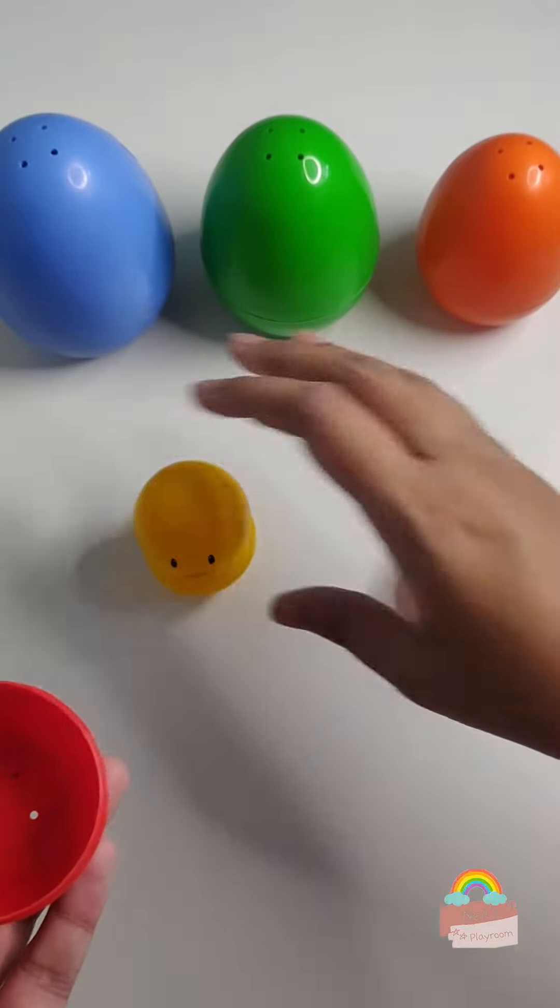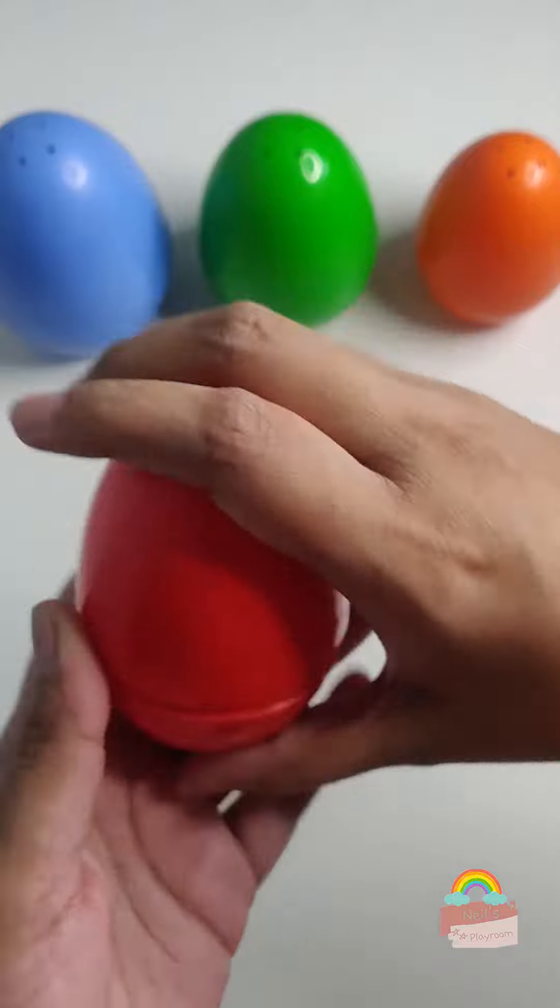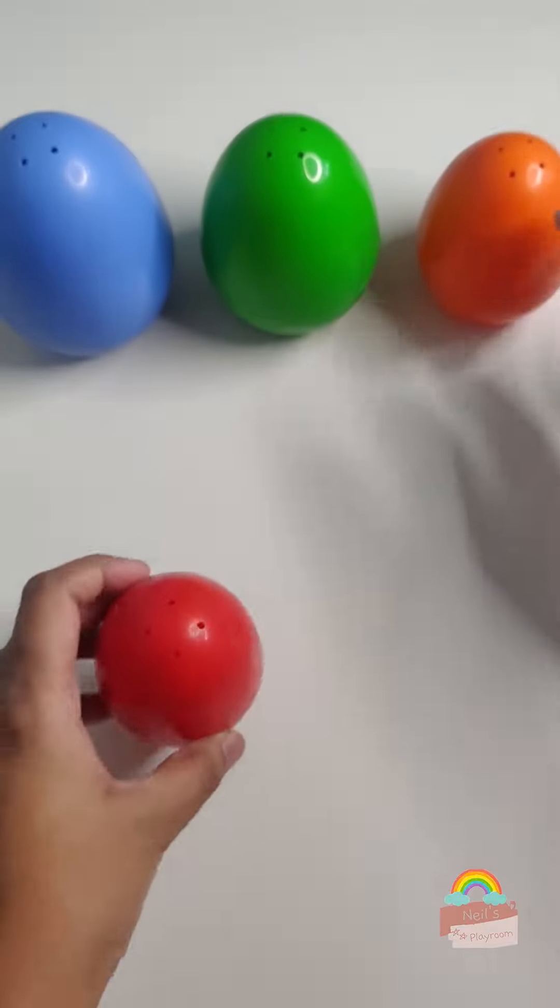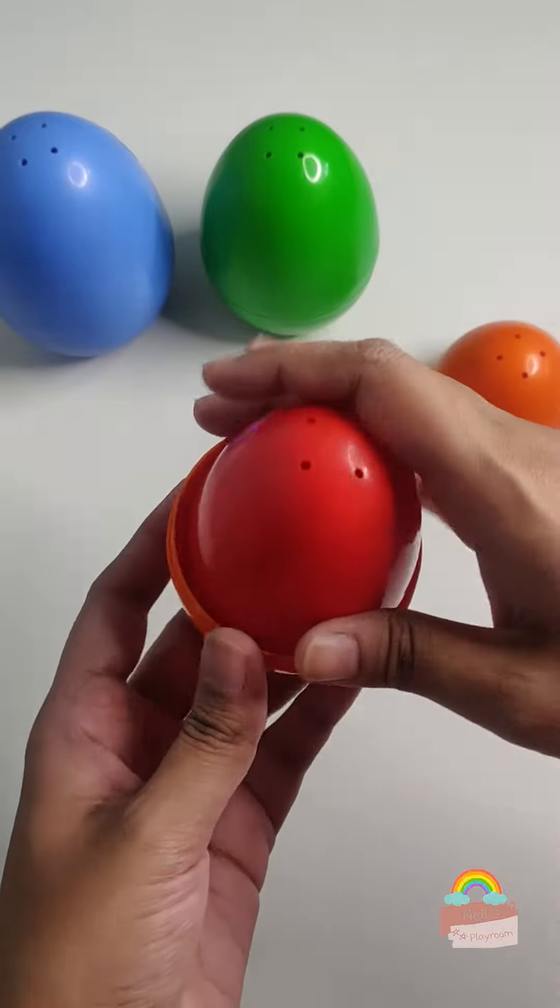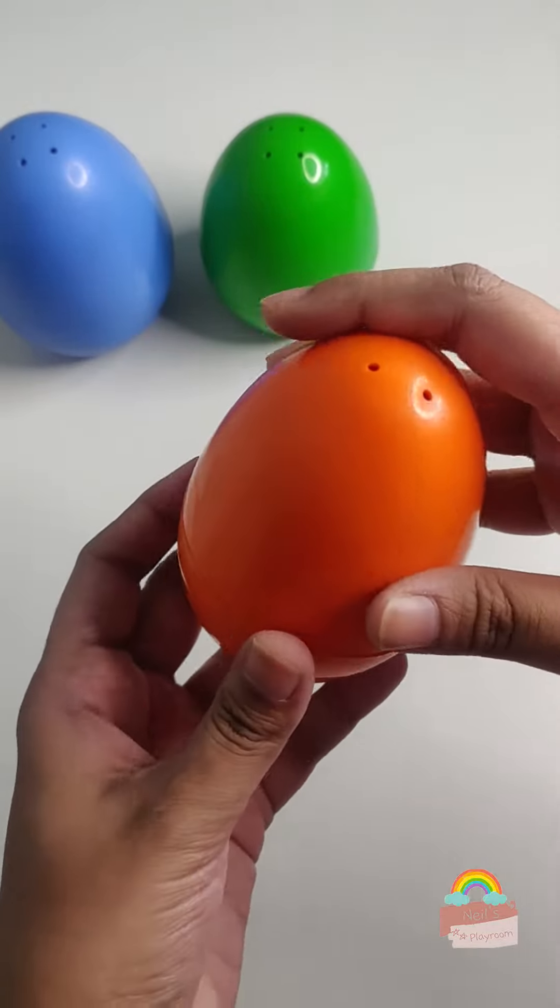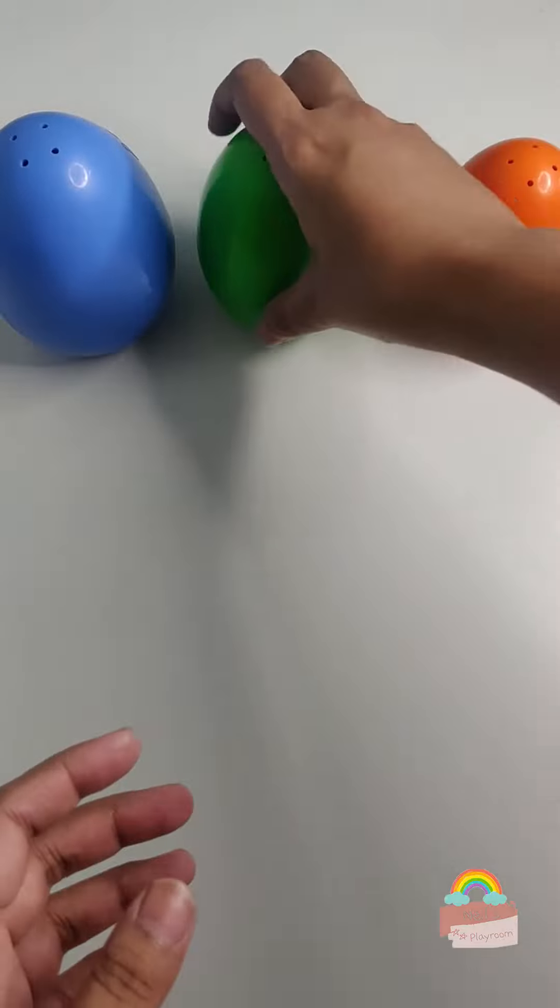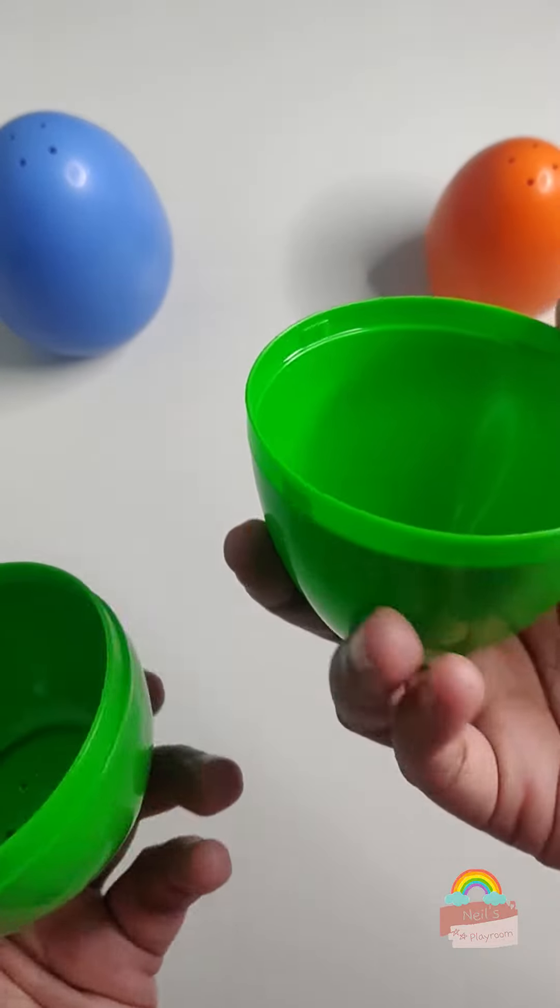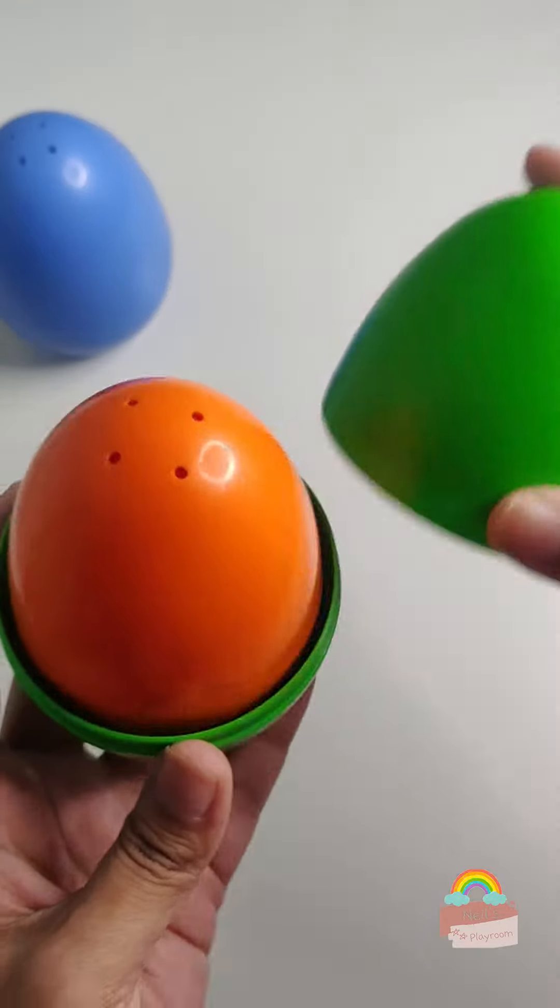Let's put the duck back into the red egg so we can put all the eggs back together. Bye bye ducky. Let's open the orange egg, which has enough space for the red egg to be put inside. Now will the orange egg fit inside the green egg? Let's find out.